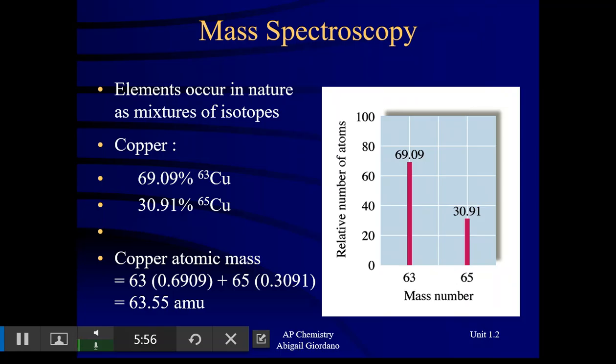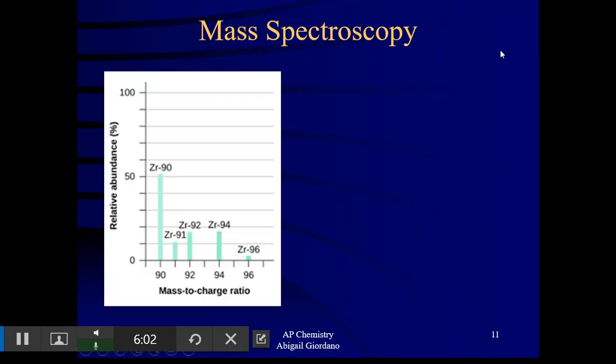So this is the math associated with mass spec data. Let's look at another one. And let's just talk about what are the types of questions you could see. First thing I want you to notice in this graph on the x-axis, it says mass to charge ratio. Please don't let that throw you. Sometimes these graphs have funny things written on the x-axis. It just means mass number. We can see that this is the graph for the element zirconium. Zirconium has five naturally occurring isotopes.